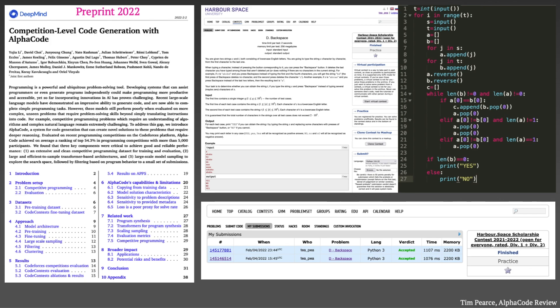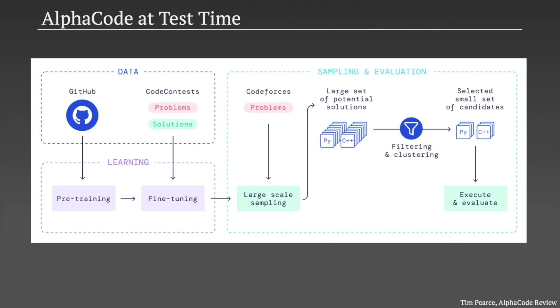The headline result is that AlphaCode achieves a success rate equal to that of the average user on the coding challenges hosted on the website CodeForces. So how does it actually work? This is the summary diagram given in the paper. At a high level, what we have is a nicely engineered system where the major building blocks are transformer language models, but essentially no individual component is that new.